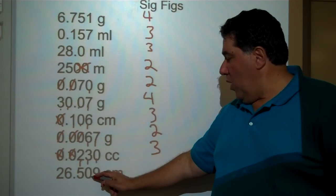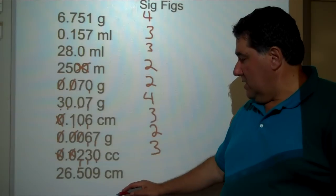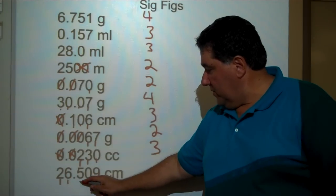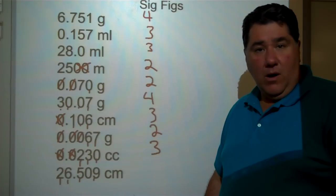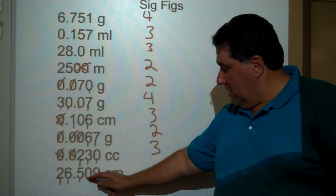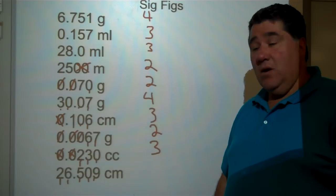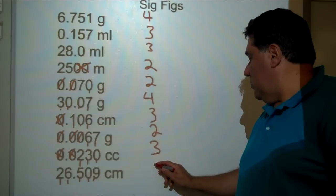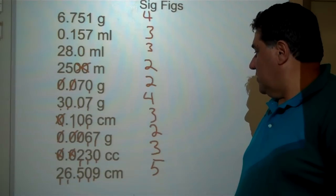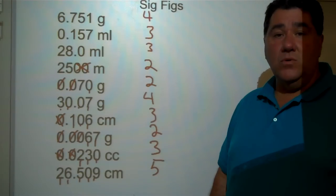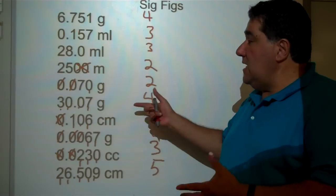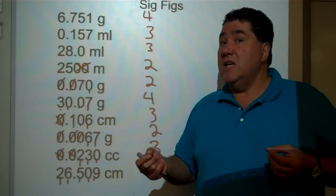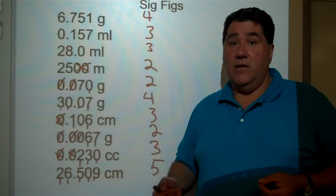And the last one: 26.509 centimeters. There is a decimal point here so we look at all the digits — one, two, three, four significant figures so far. There is a zero here that falls between two significant figures, so it is also significant. That gives one, two, three, four, five total significant digits. And that's how you deal with the rules for significant figures. You need to use these rules because when we do scientific notation, we will only use significant digits in our calculations.